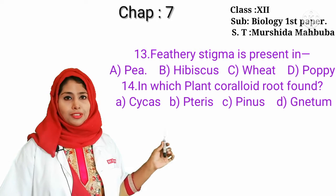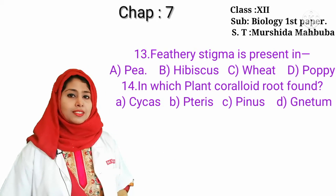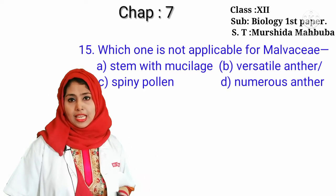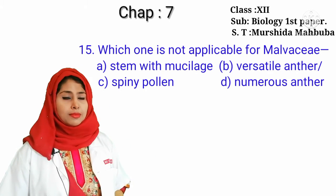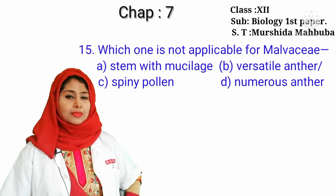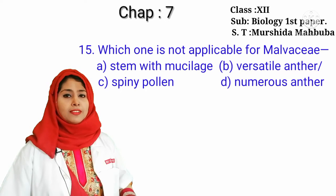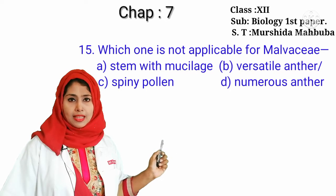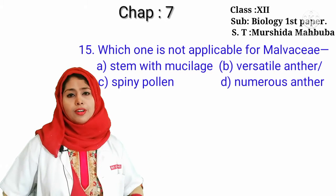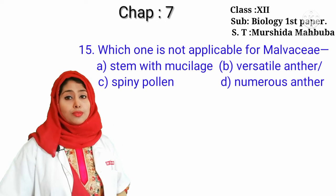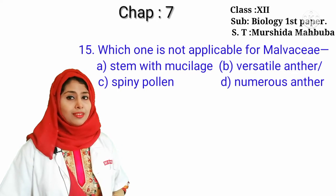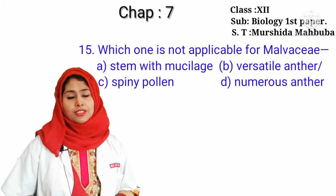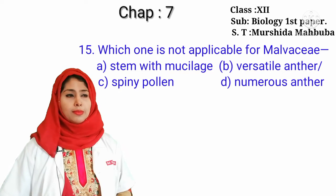In which plant is coralloid root found? The correct answer is Cycas. Which one is not applicable for Malvaceae? Stem is mucilaginous — applicable for Malvaceae. Spiny pollen — applicable for Malvaceae. Numerous anthers — also applicable for Malvaceae. So which one is not applicable? Versatile anther — yes, that is not applicable for Malvaceae.